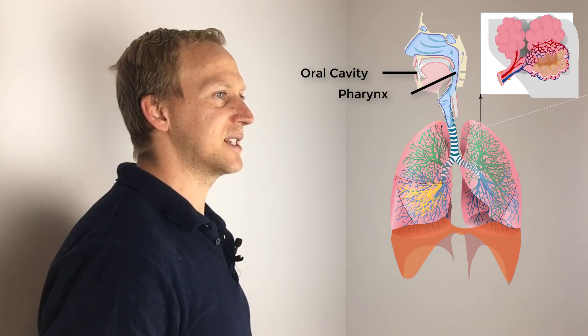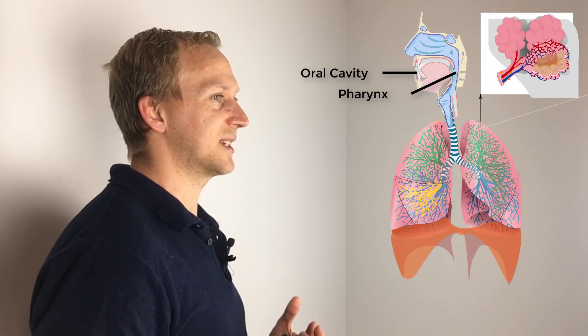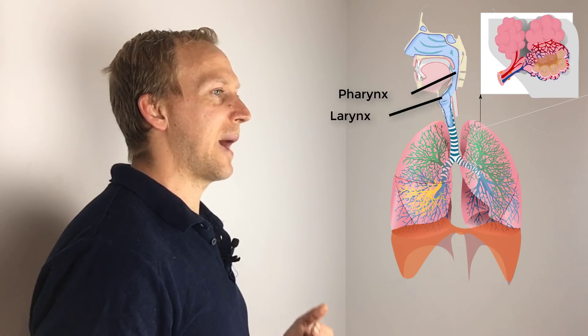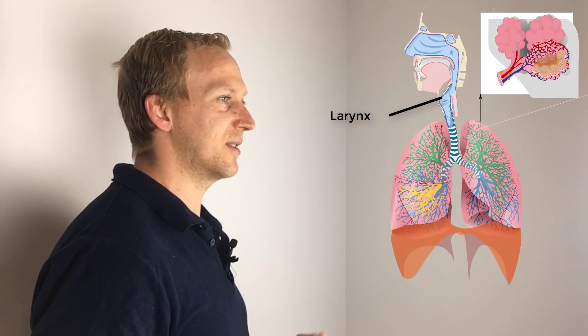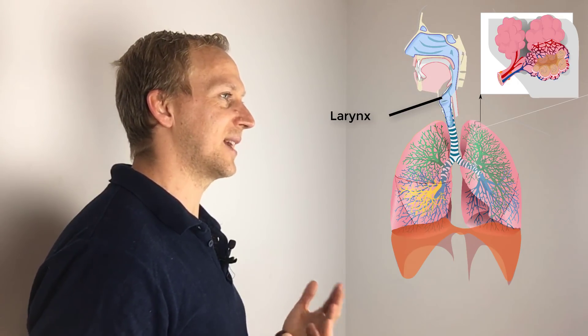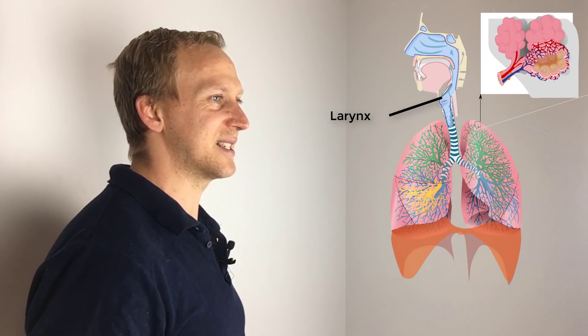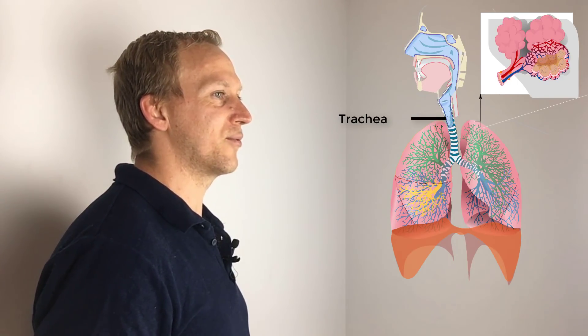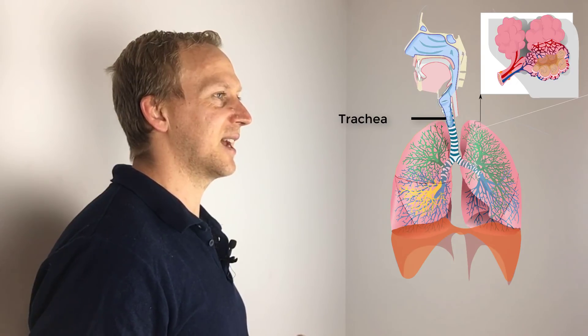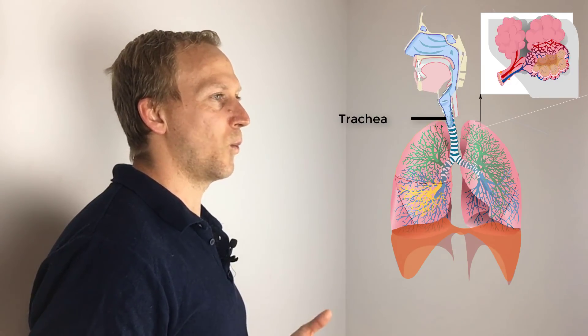The pharynx is where the nasal and oral cavity join together. You then have the larynx, also known as your voice box, which is involved in making sound and allowing you to speak and sing. You then move down to your trachea, which is the main air pipe that brings air down to the lungs — it further warms and adds humidity to the air as it comes down.